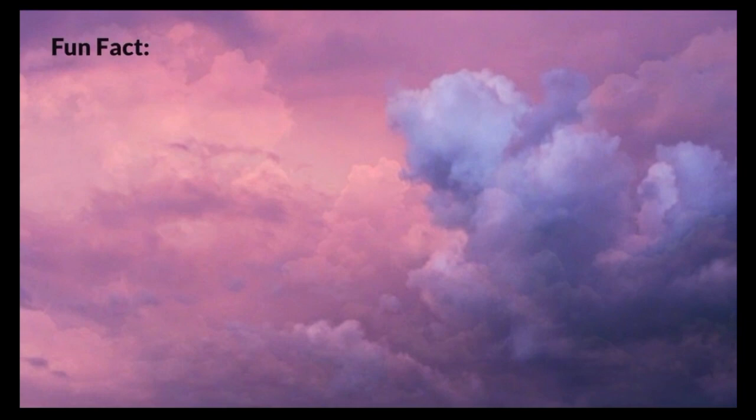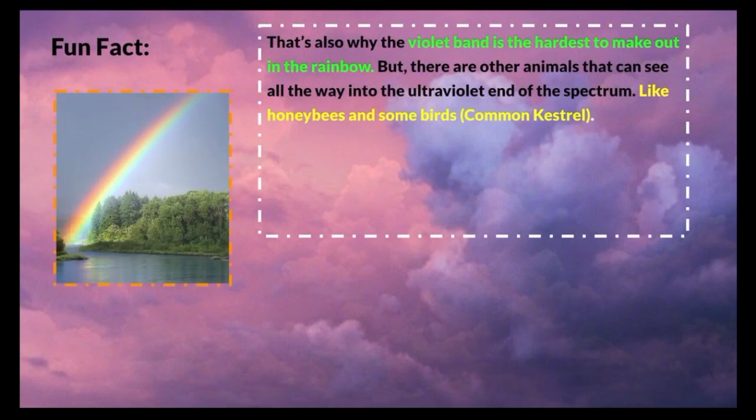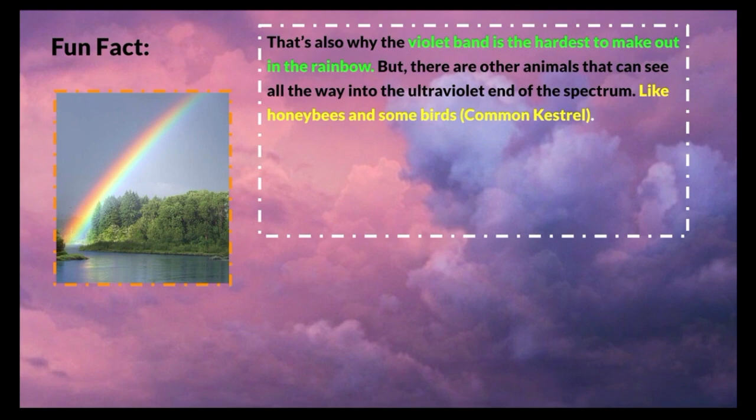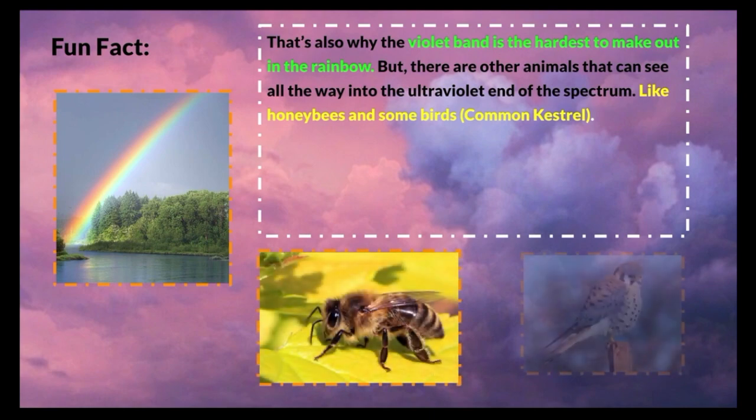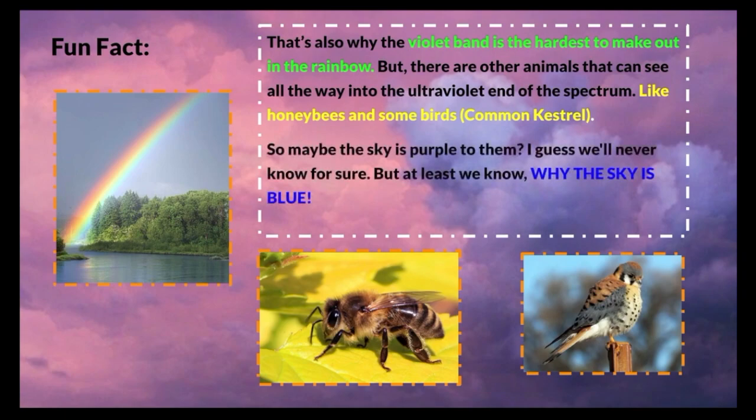Fun fact! That's also why the violet band is the hardest to make out in the rainbow. But there are other animals that can see all the way into the ultraviolet end of the spectrum, like honeybees and some birds, more specifically the common kestrel. So maybe the sky is purple to them? We'll never know for sure.